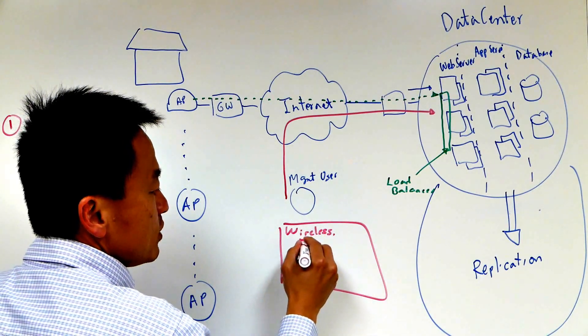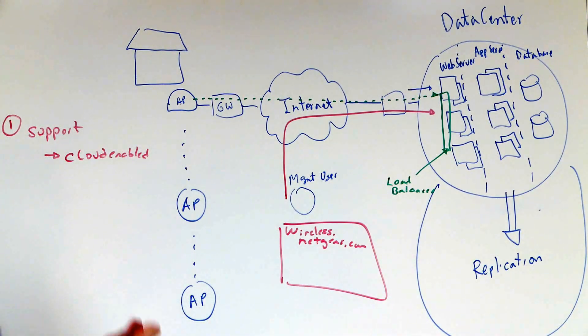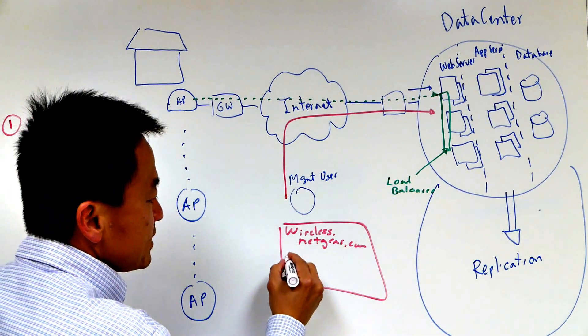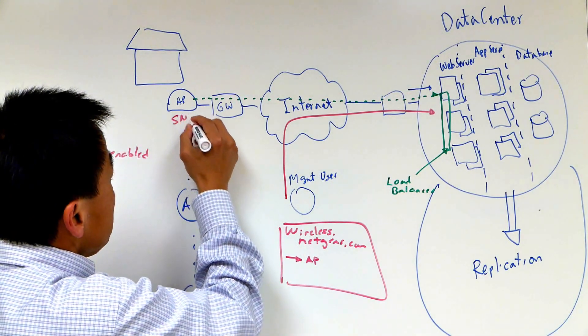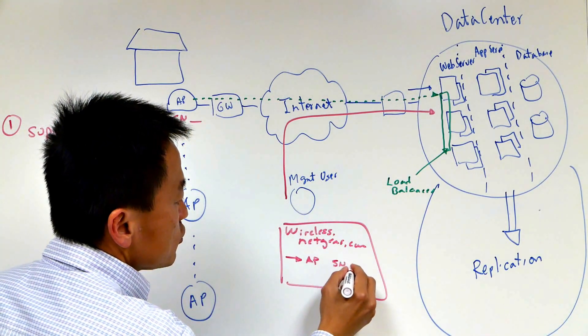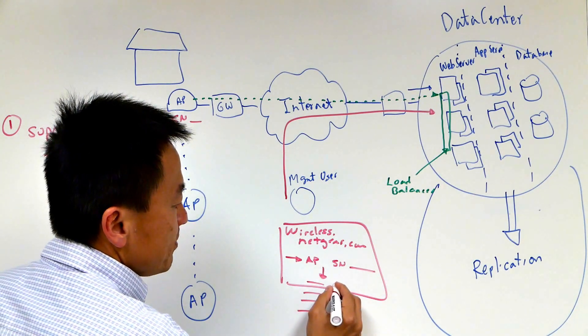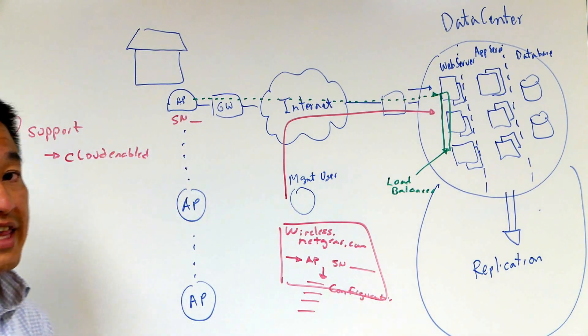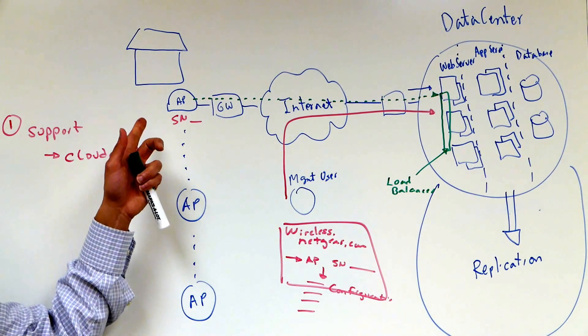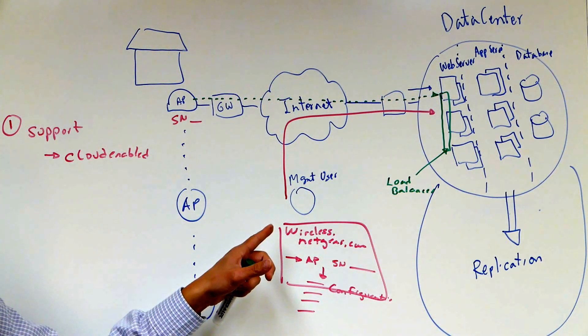And the management user simply has to log in there and get a nice portal and you'll have more information about that in subsequent whiteboard sessions. Automatically you get a user interface and you can automatically say access point with this particular serial number belongs to me and automatically you can start configuring different types of configurations. Simple as that. And that's how you get the access point configured using the Business Central management.